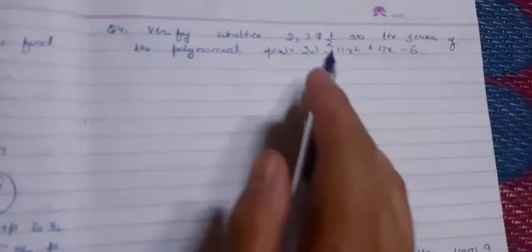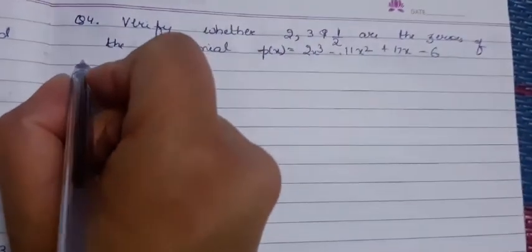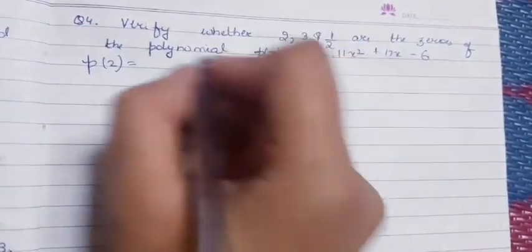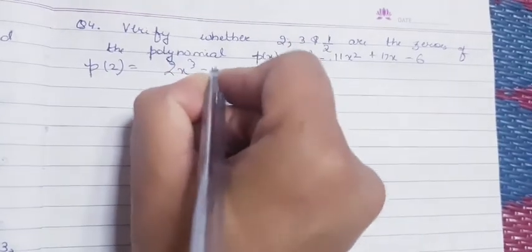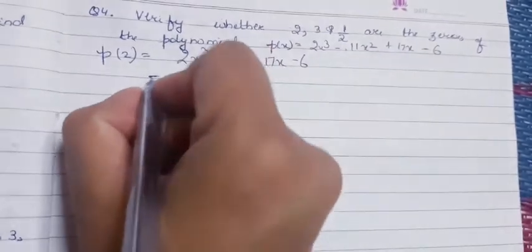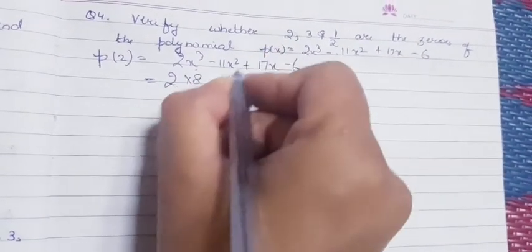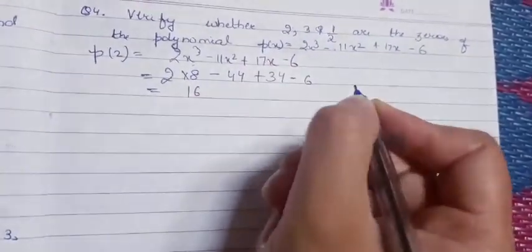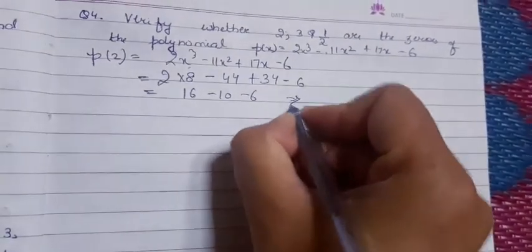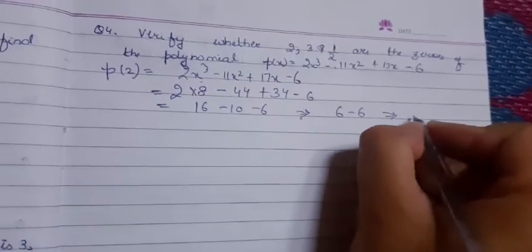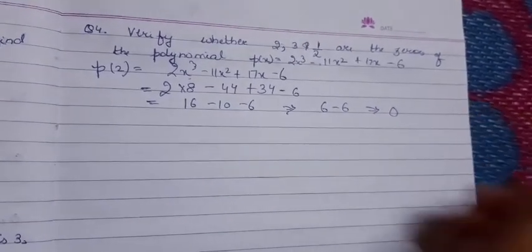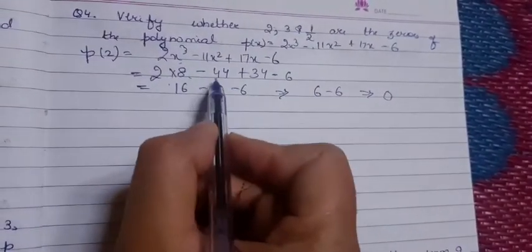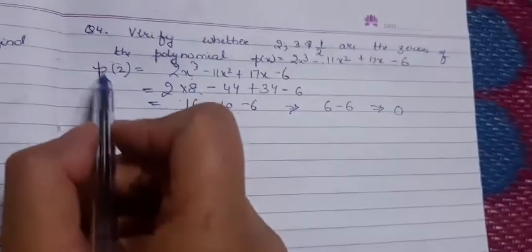Verify whether 2, 3, and 1/2 are zeros of the polynomial 2x³ - 11x² + 17x - 6. We have to verify. In this case, we just check. First, take x = 2. Substituting: 2(8) - 11(4) + 17(2) - 6 = 16 - 44 + 34 - 6 = 0. So 2 is a zero of p(x).